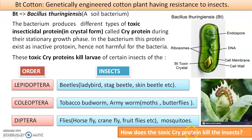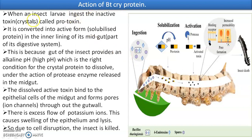When an insect starts feeding on the leaf of a plant that has been modified with the cry gene — the gene producing cry protein — or if spores of Bacillus thuringiensis are sprayed on plants and the insect feeds on them, it enters the insect's gut. It enters as a crystal called protoxin. The digestive tract has a foregut, midgut, and hindgut running from the thorax to the abdomen.